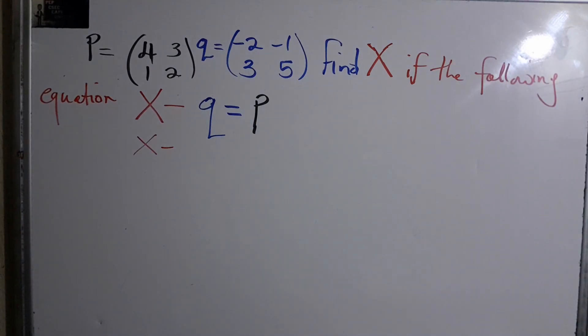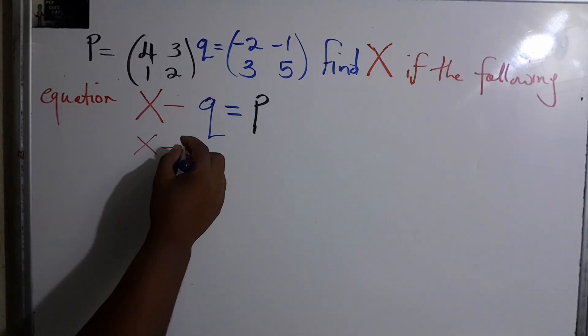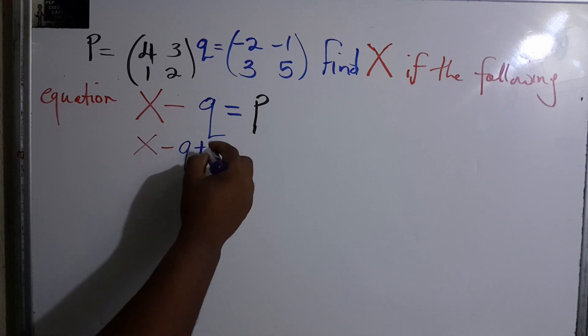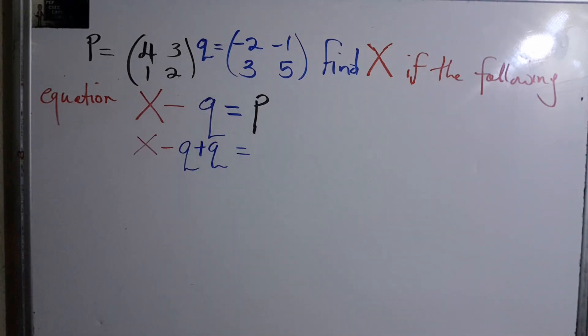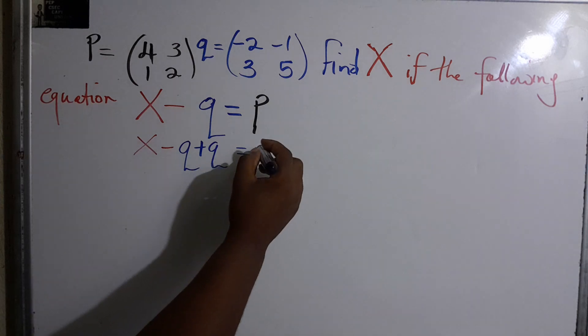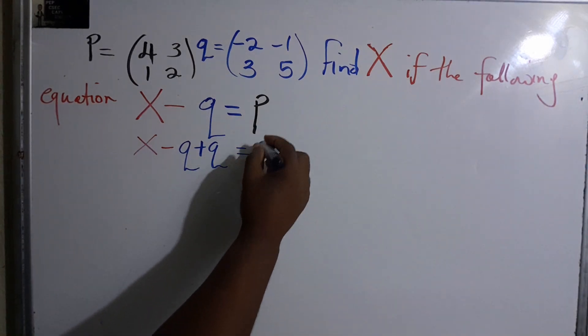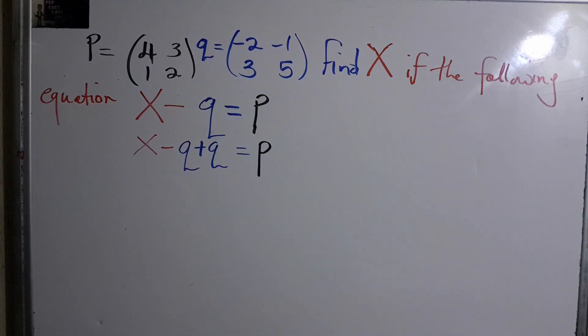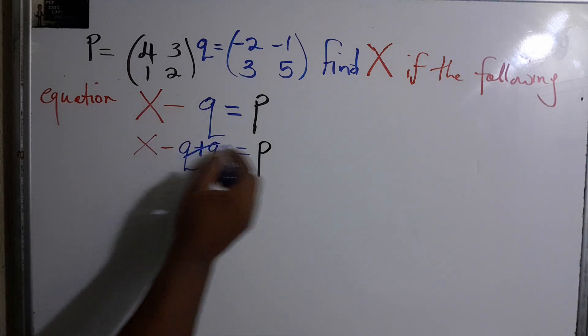We're going to add Q to this side also, so we just transpose before we begin. This is gone now and then we have Q. So what we have to do to find X is add P and Q.